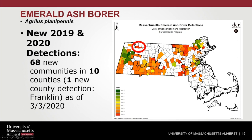Emerald Ash Borer was first detected in Berkshire County in 2012, and you can see the spectrum of detections right up until this year. Most of the ash resource in Massachusetts is located in our forests in Western Mass. That said, Fraxinus is a popular genus for urban forests and street tree plantings. Many communities across Massachusetts will be dealing with the aftermath of EAB infesting their ash trees — eventually they decline, die, and become hazardous.